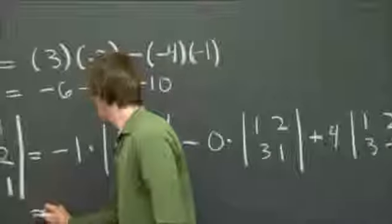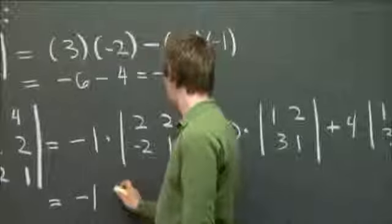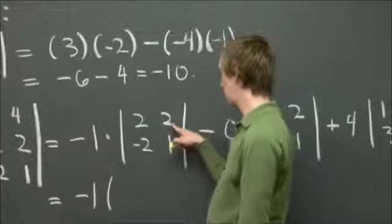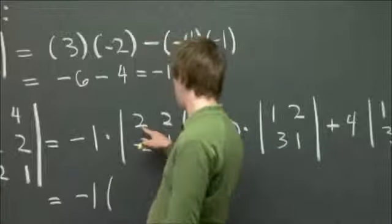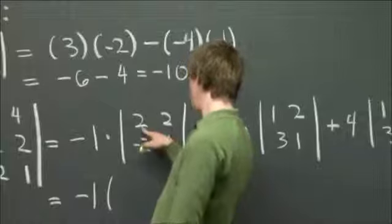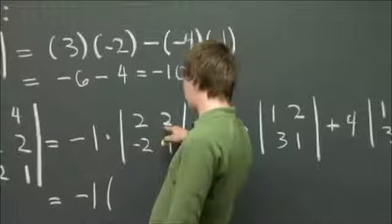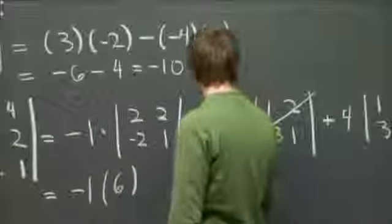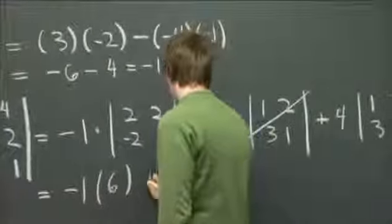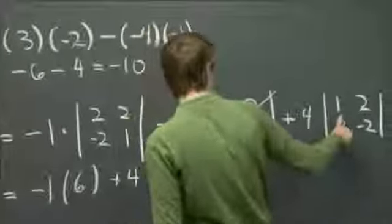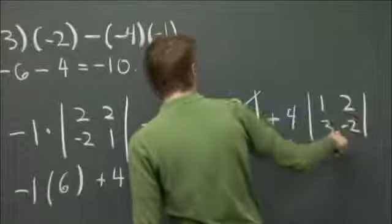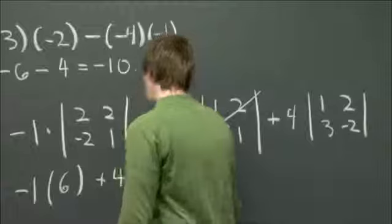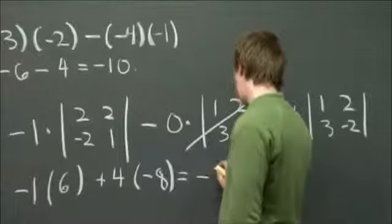Altogether, we get minus 1 times 2 minus another 2. 2, excuse me, 2 minus a negative 4. So we get 6. This one goes away. And then we have plus 4 times. We have minus 2 minus another 6. So it looks to me like minus 8. Altogether, we have minus 38.